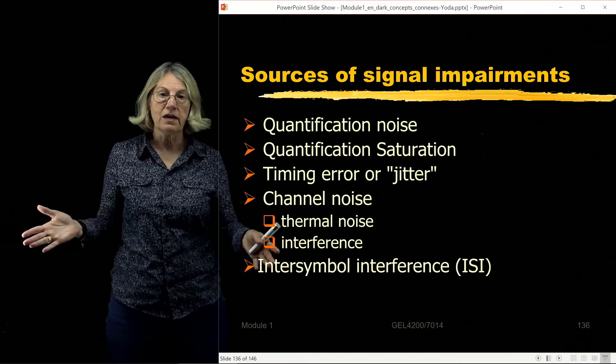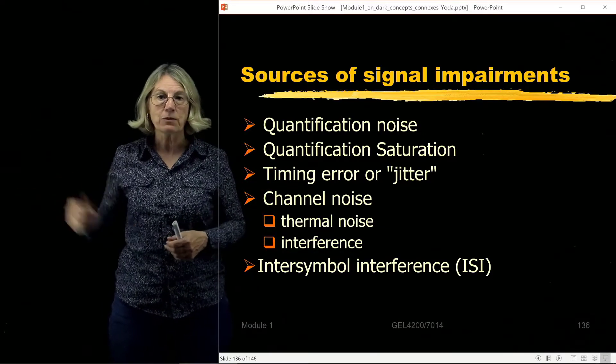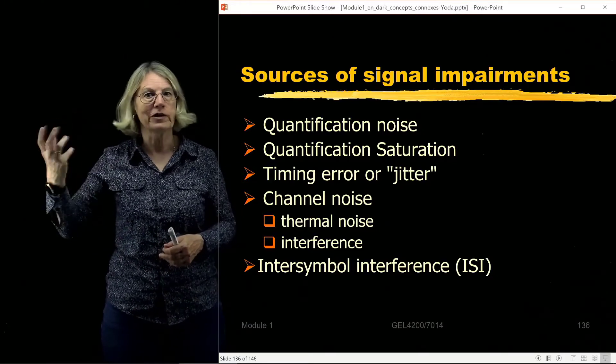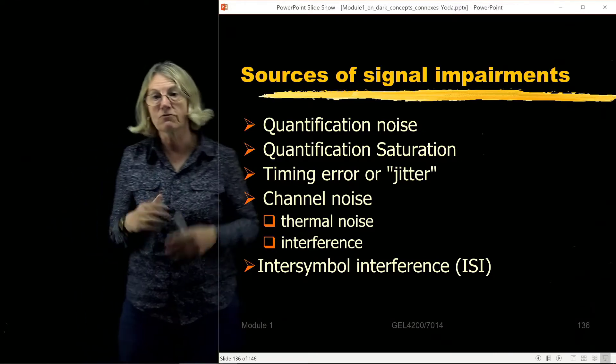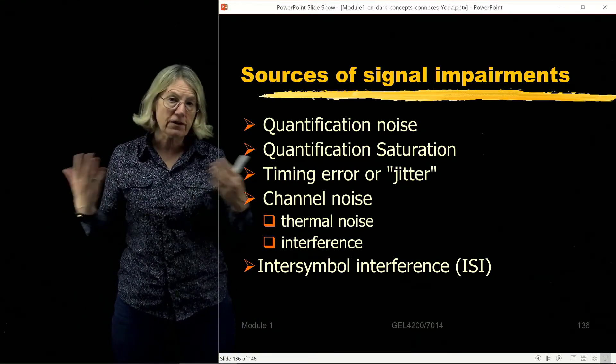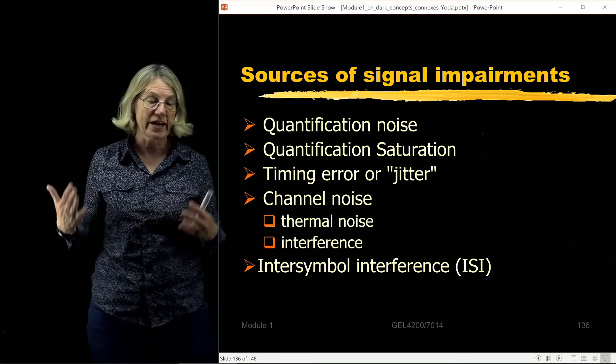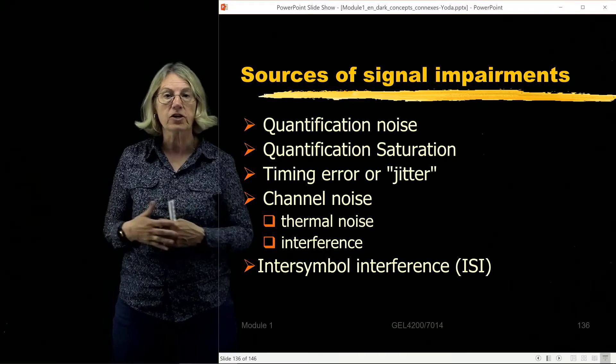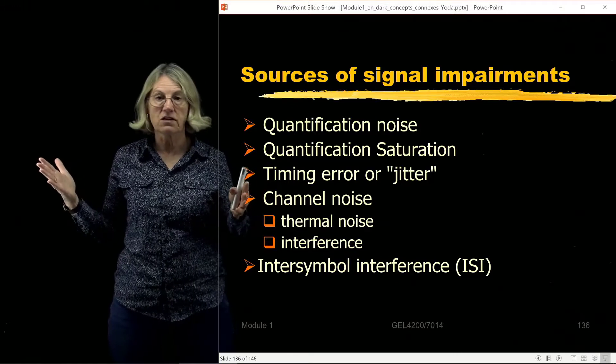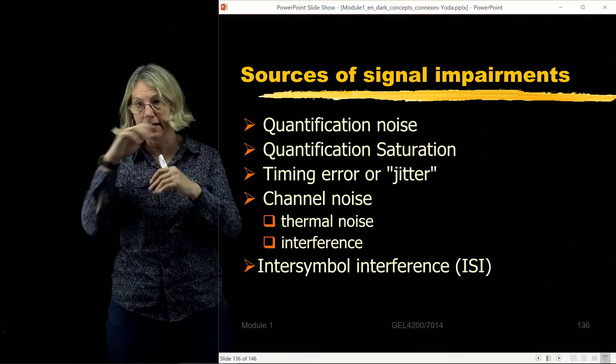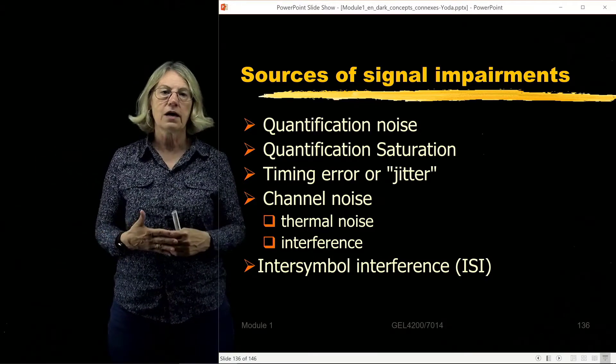The interference could be if your communications link is your radio and you turn on a vacuum cleaner, the vacuum cleaner could create some very impulsive noises that we hear as clicks over the radio signal. That's a kind of interference. Another kind of interference is when we have many users trying to access the same channel. This would be something we might see in cellular communications, where you might get a dropped call because there are many signals in the same vicinity of a base station and the base station cannot sort them out or handle them all.